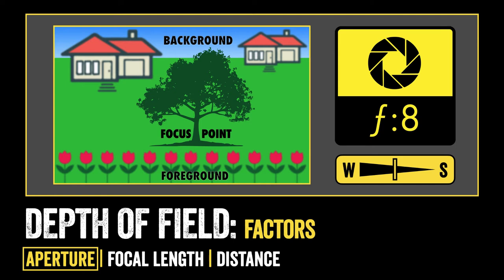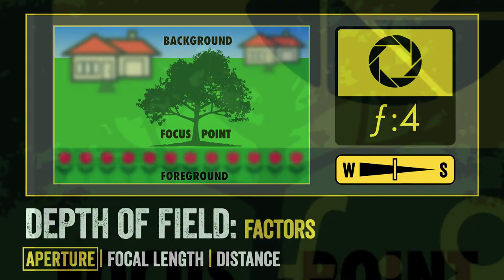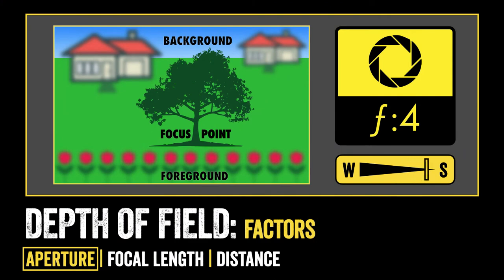So now the houses in the background become slightly out of focus, and the flowers in the foreground become slightly out of focus. As we continue to increase our aperture, let's say another two stops to F4, we further decrease the depth of field. So you can now see the houses in the background are much more out of focus, and the flowers in the foreground are much more out of focus than they were in the previous image. As we increase our aperture, we decrease our depth of field — going from a wide depth of field to a shallow depth of field.